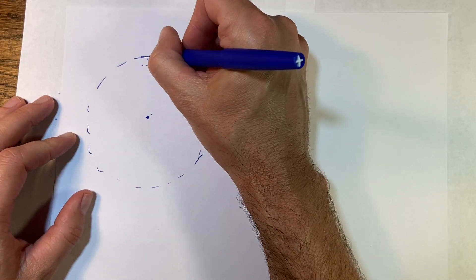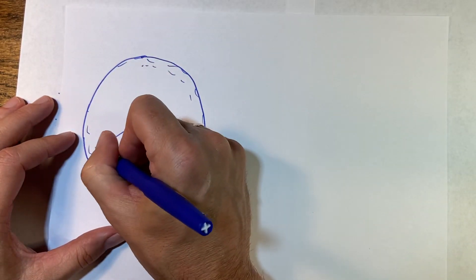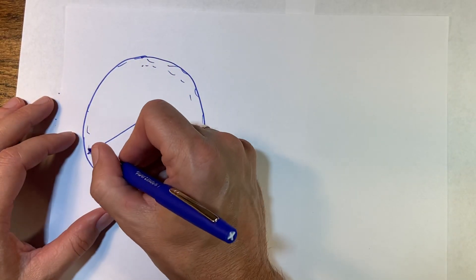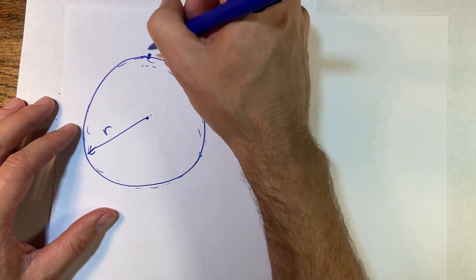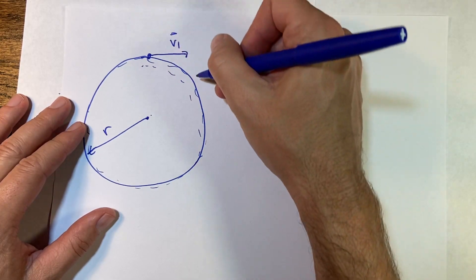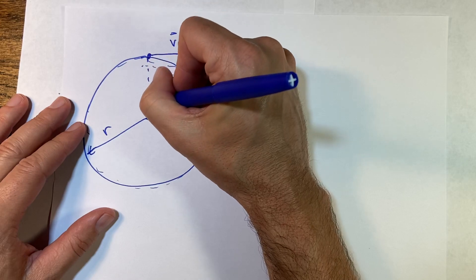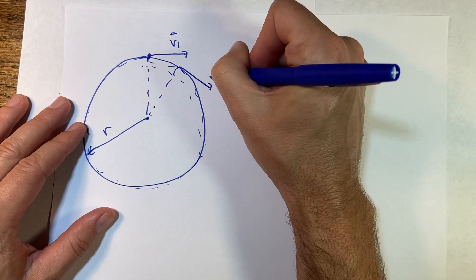So here is an object moving in a circular path, and the radius of this circle is r. Right here I have the object and it has some velocity v1. It's a vector, and then a little bit later has a velocity, the same magnitude but in a different direction, v2.